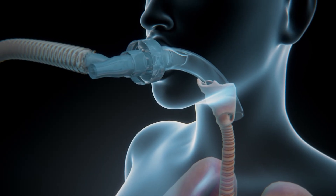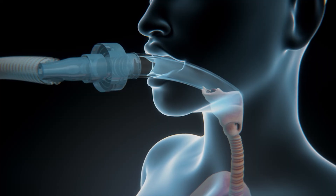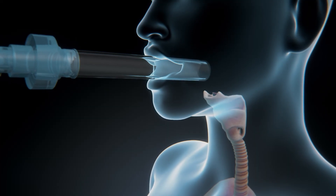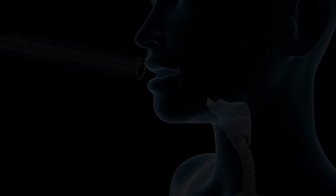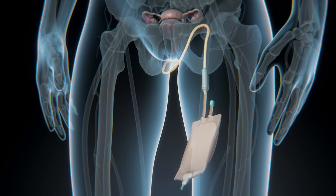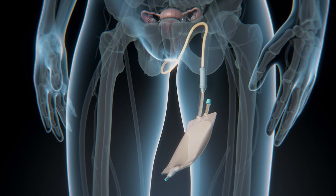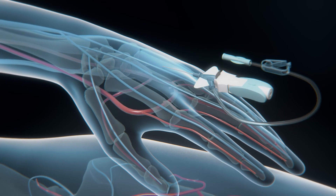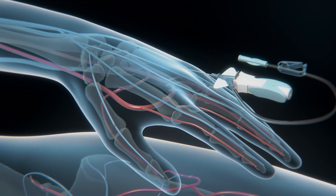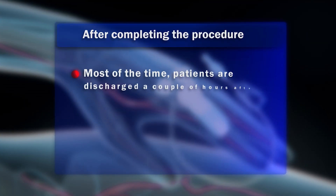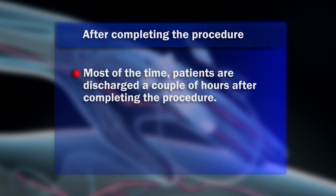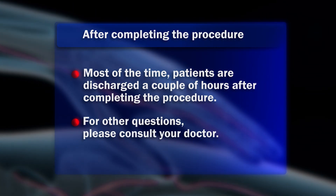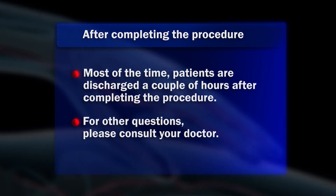Your breathing tube will be removed at the end of your procedure and you will be observed in the recovery area. Soon after, your catheter will also be removed and you'll be given painkillers if necessary. When you are able to consume liquids, your IV will be taken out. Most of the time, patients are discharged a couple of hours after completing the procedure. For other questions, please consult your doctor.